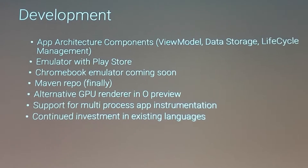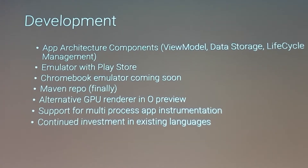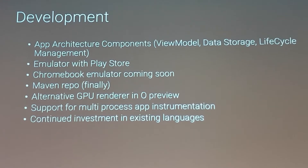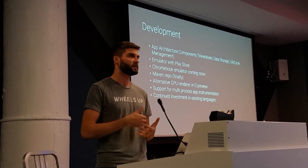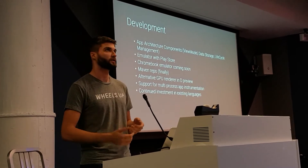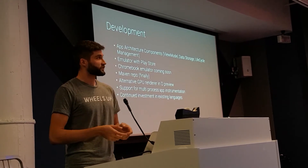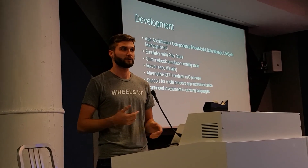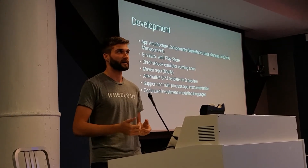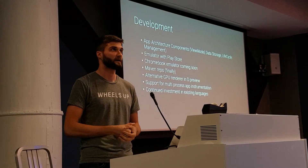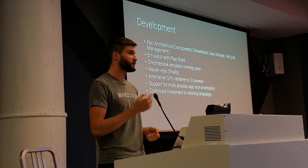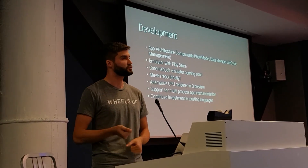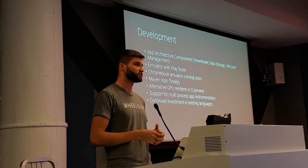Right before IO they launched the emulator with Play Store support — you've never been able to get the Play Store on an emulator before, but now you can. You do lose root access, but it's nice to test things like if your app shares to Facebook and you just want to check that integration. Android apps on Chromebooks are a thing, and the Chromebook emulator is finally coming soon. There's also maven.google.com now, so if the SDK manager has been a pain especially on CI, that's there for you. There's also an alternative GPU renderer in the O preview — try it out and report bugs.